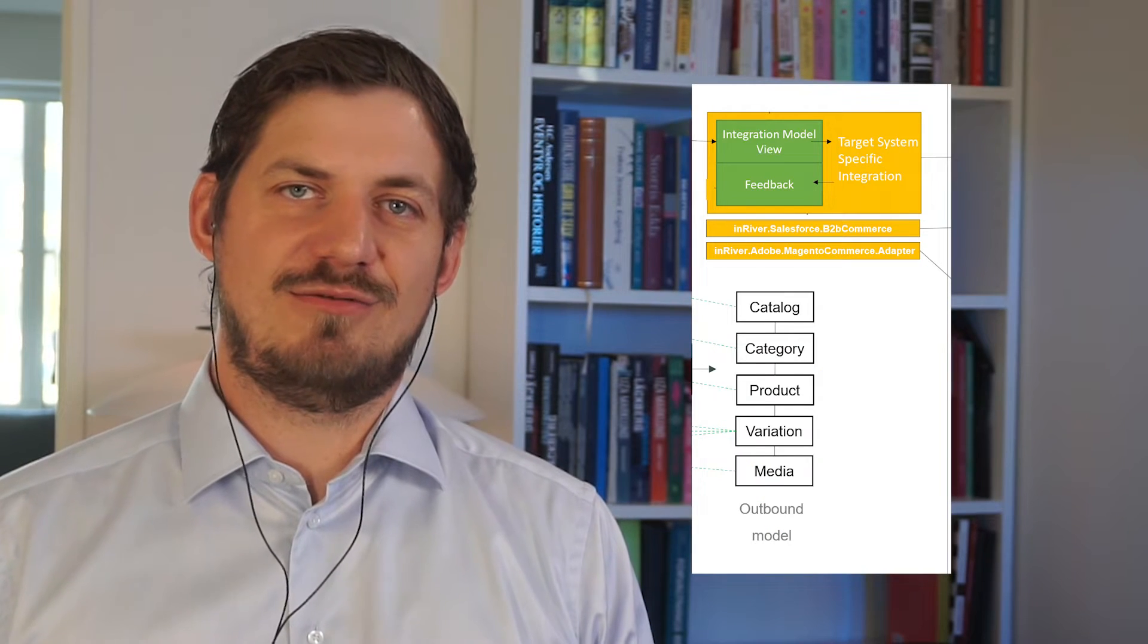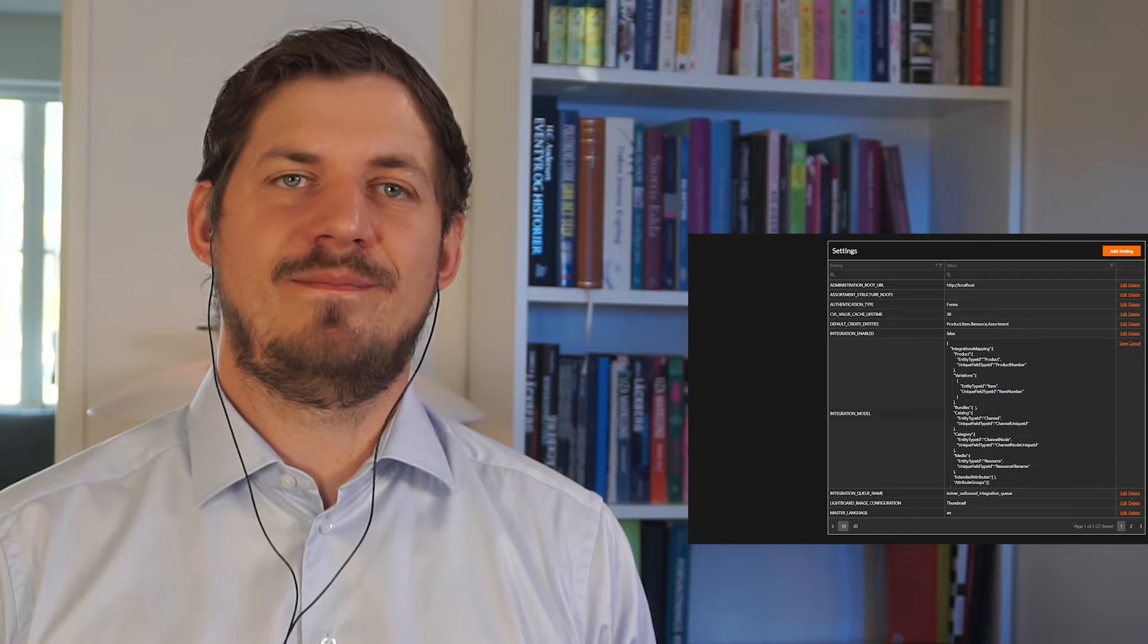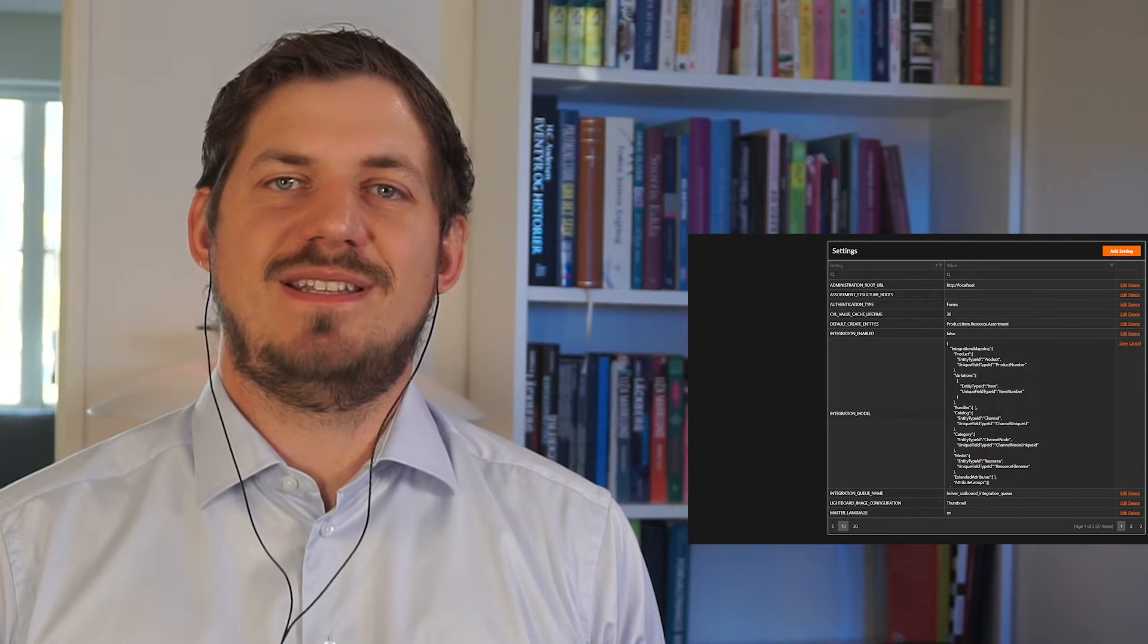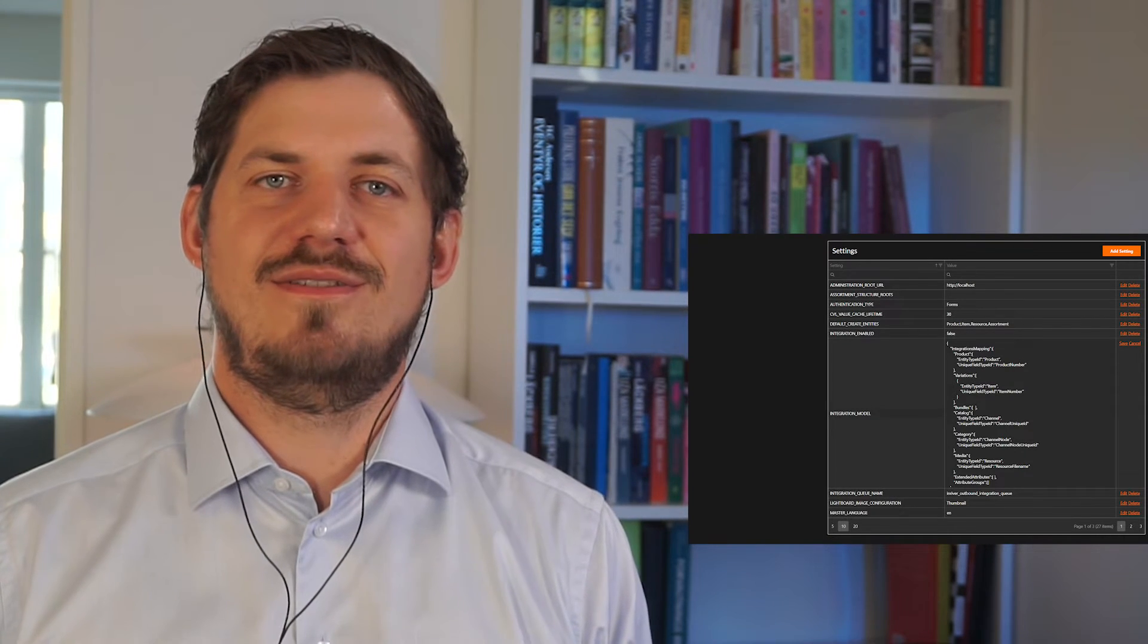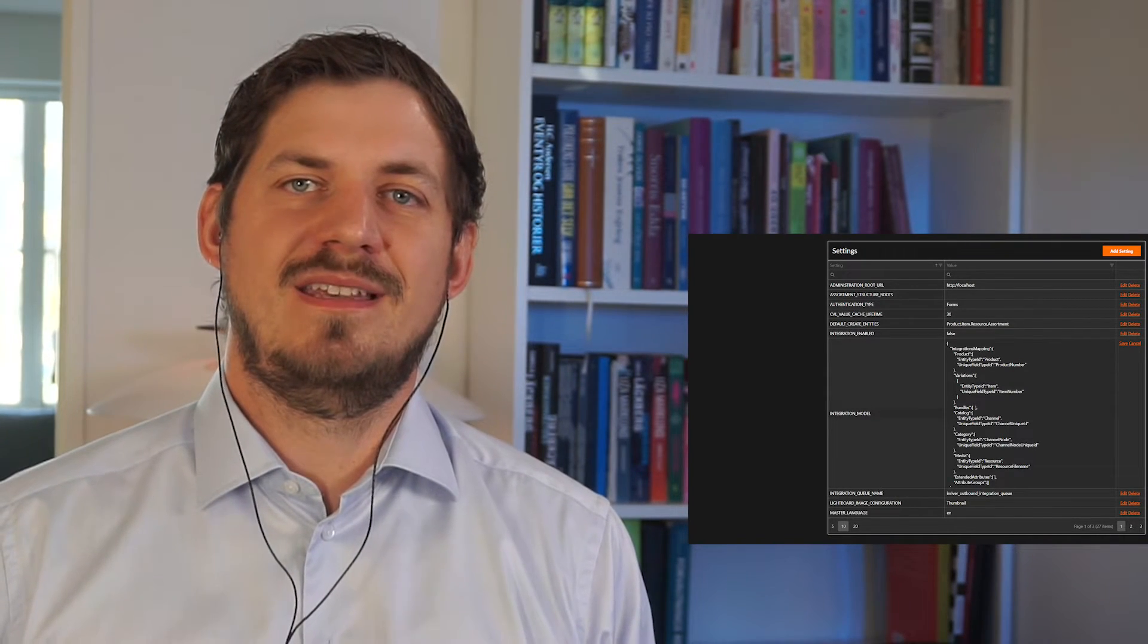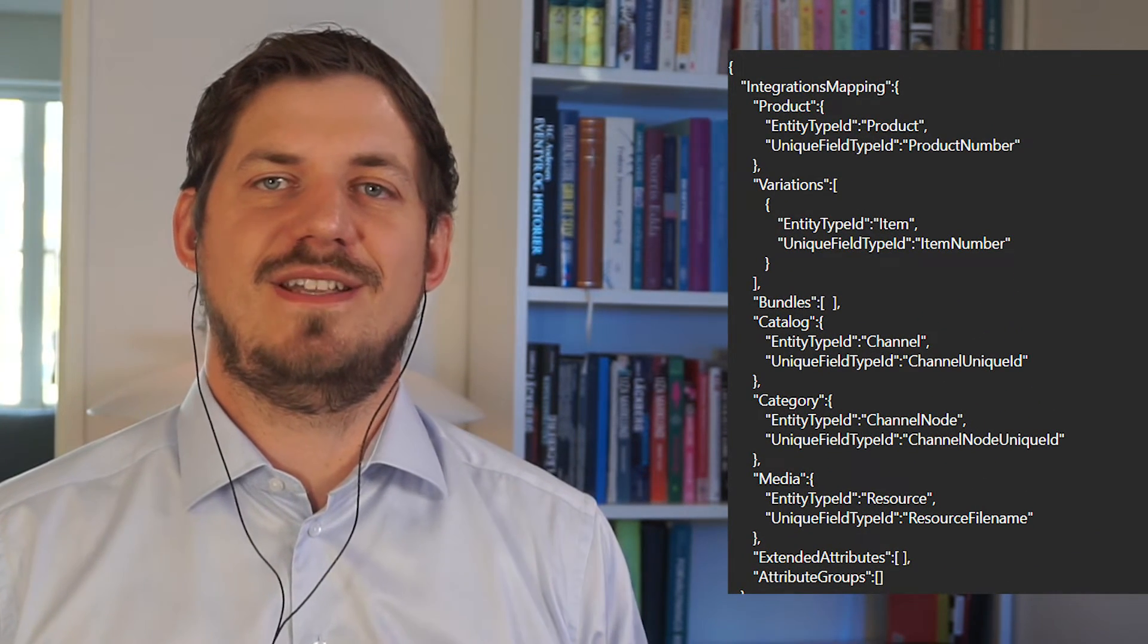The model is set up in the control center, and here I have a basic example using the InRiver demo model. This model has been extended with unique IDs on channels and channel nodes for the framework to function. Here you specify the entity type to map from, and in the case of variations, you can specify a list of entity types.